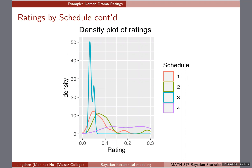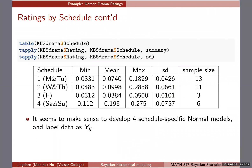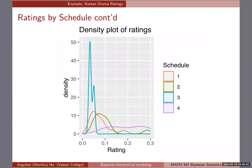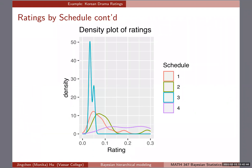All right, coming back from the breakout rooms — does anyone want to make some quick comments before we move on? The density plot and summary table show some interesting features about the ratings of different schedules. Anything interesting jumping out that we should pay extra attention to?